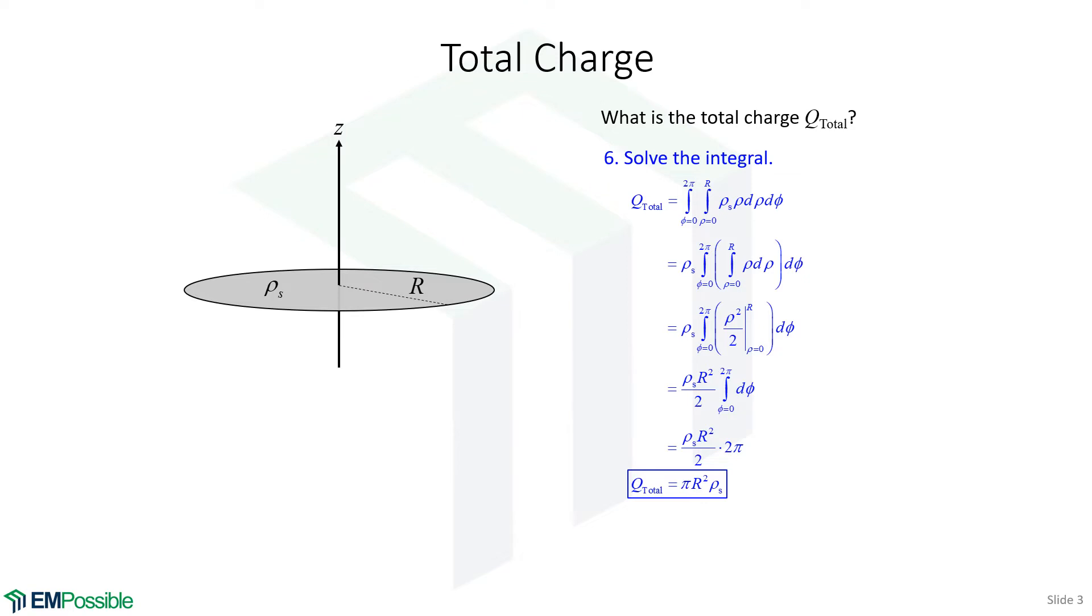Does the pi r squared sound familiar to you? It turns out that's the area of the circle. So for a uniform charge density, we can write a different equation, which in some ways is more useful. It's just the surface charge density times the area of the surface. It doesn't matter what the surface looks like. It could look like a potato chip or a horse saddle or something completely crazy. As long as we know the surface area s, and we know it has a uniform charge density, we can calculate the total charge using this equation.